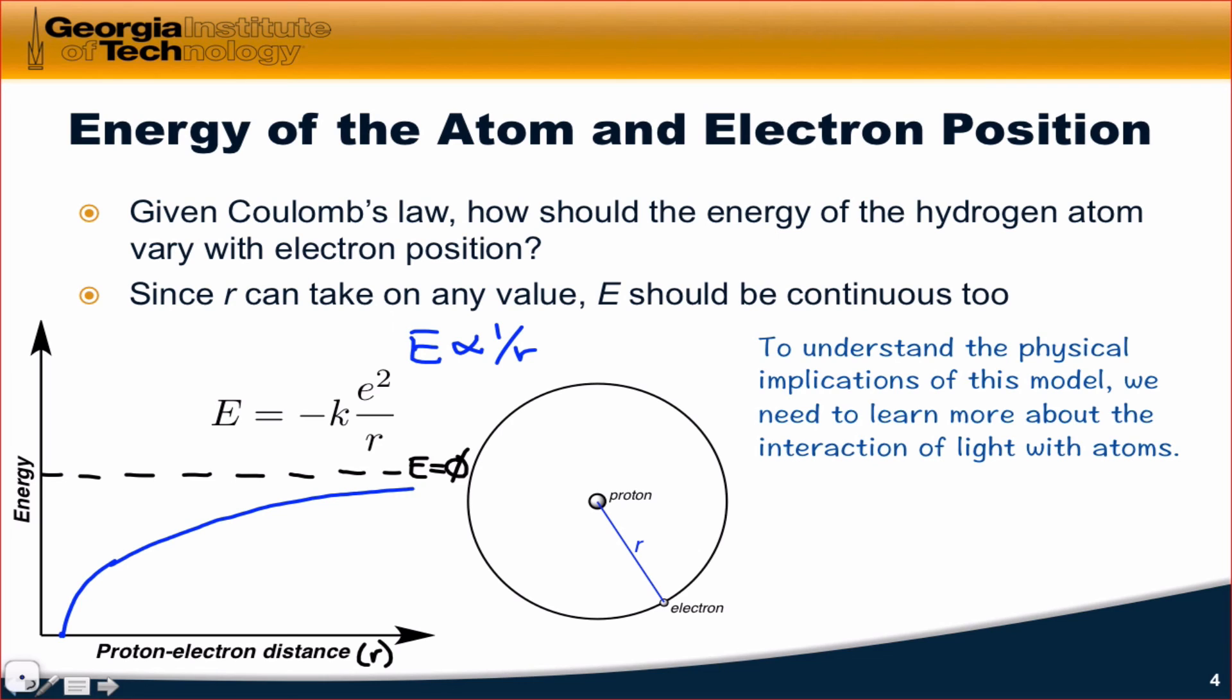And so we can see that the energy of the atom as a function of the proton-electron distance is just an asymptotic function that approaches zero as we move out to the right, and at zero distance, it's equal to negative infinity.